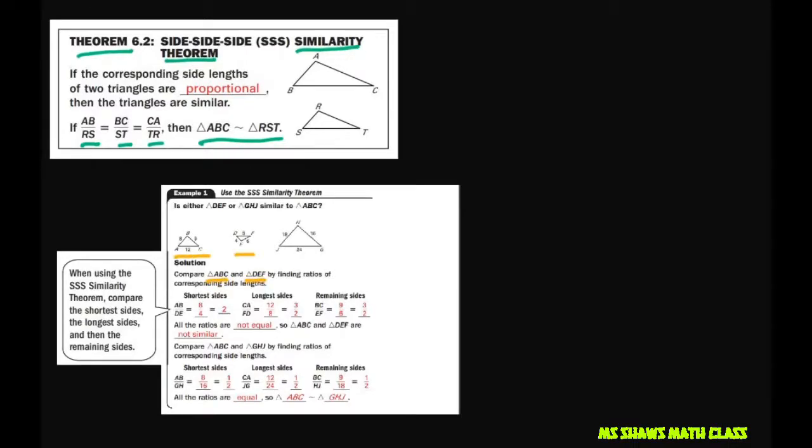The two shortest sides are eight and four, so that's AB and this one is DE, and that is eight to four, which gives you two. The next larger sides would be 12 and 8. When you do that one, you get this number, and then the remaining sides you get this, but since the ratios are not equal, that means the triangles are not similar.